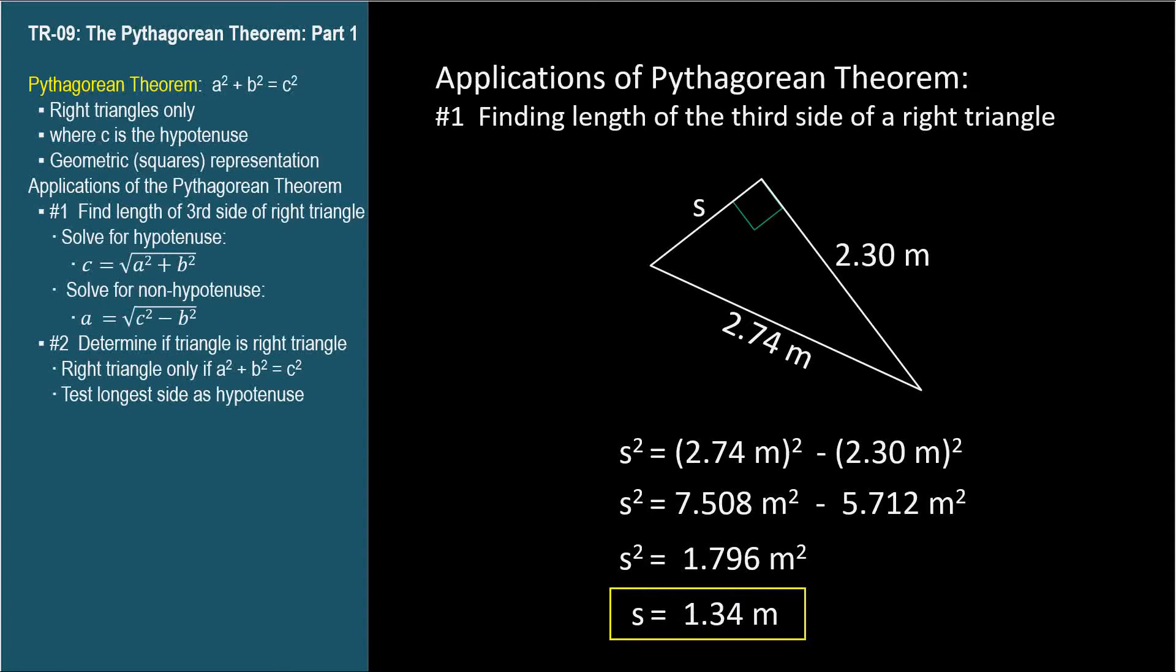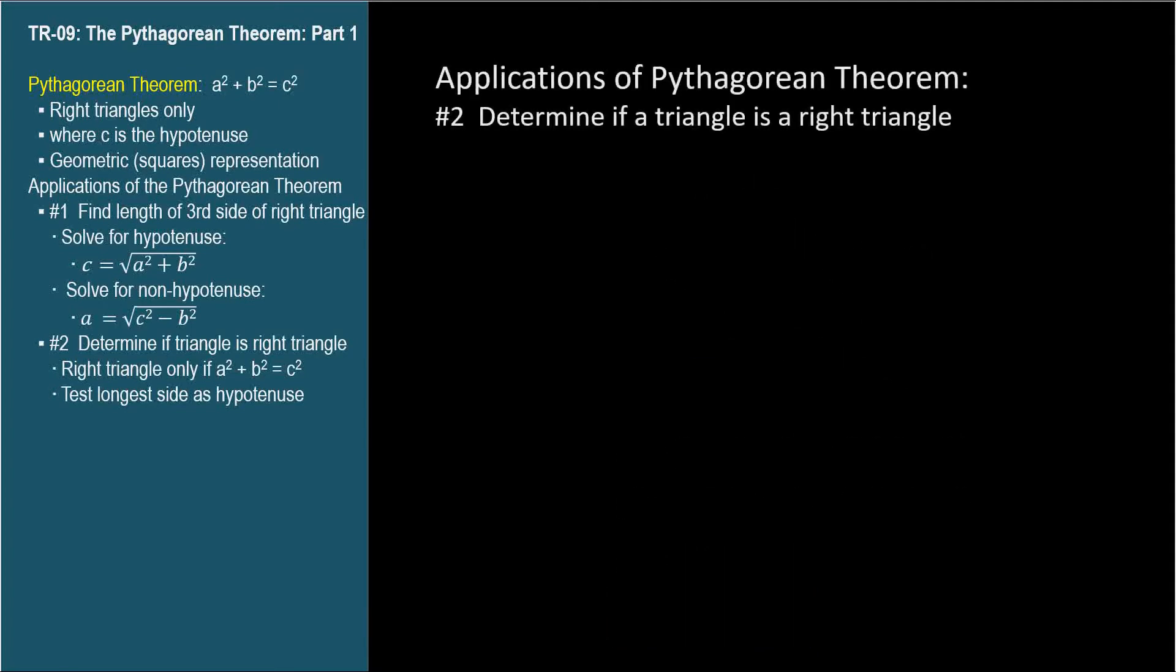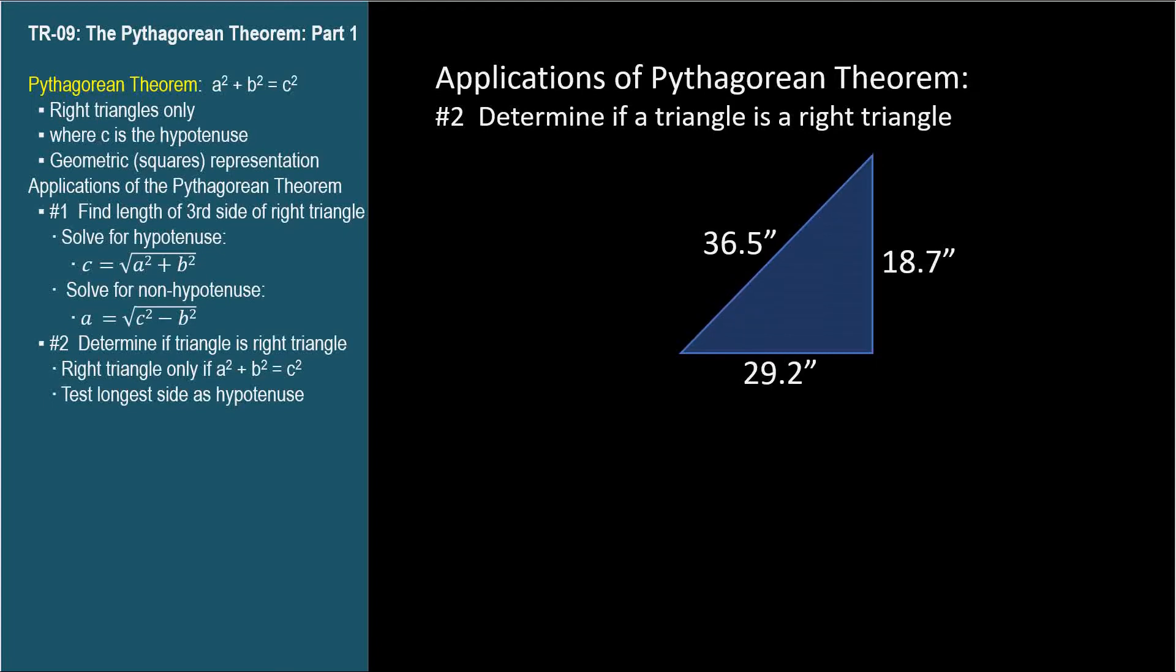The second application is to determine if a triangle is a right triangle if we know the lengths of all of its sides. If the triangle is obtuse, then c squared will be greater than a squared plus b squared.